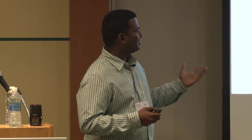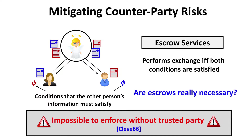One question we want to ask is: are escrows really necessary? Maybe we could do something clever and save ourselves a couple of thousand bucks by not using the escrow. But here we have a classic impossible result due to Cleve, which basically says that these information exchanges are impossible to enforce without a trusted third party. So for smart contracts, you cannot enforce these contracts without using a trusted party.